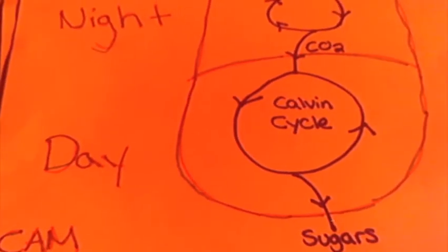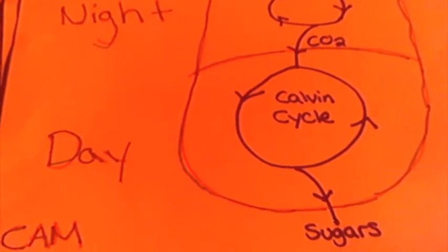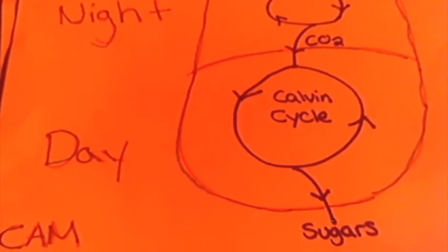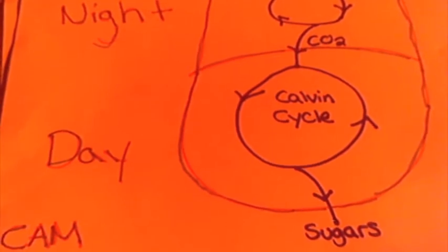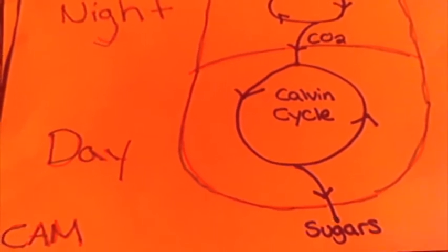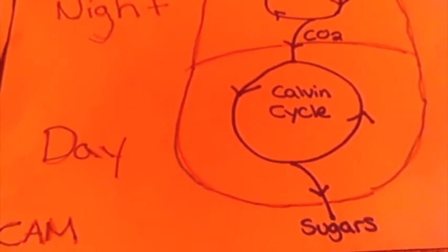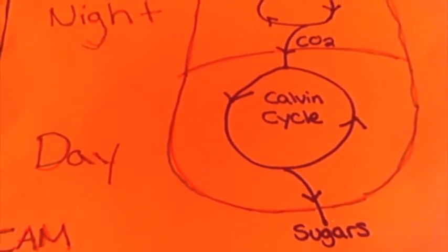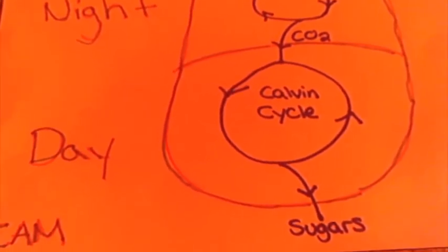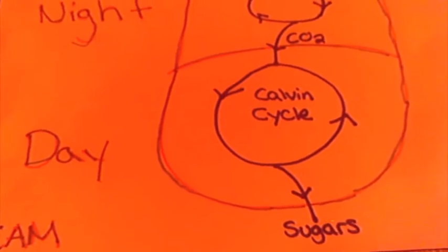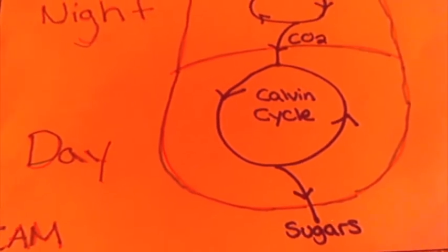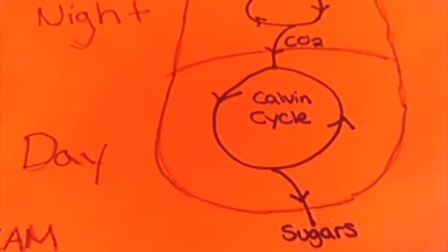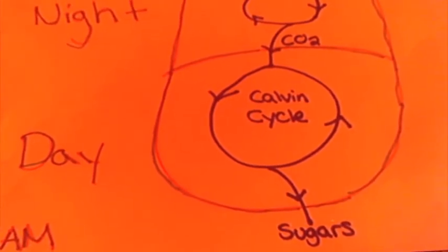Most plants with CAM photosynthesis grow in deserts and other arid environments. In such environments, evaporation loss of water is lower in CAM plants because they close their stomata during the day.